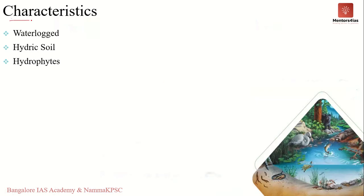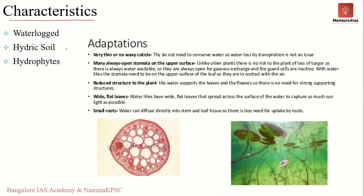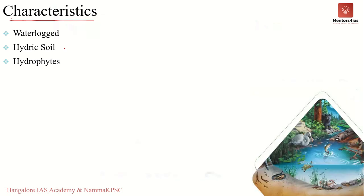Next, the characteristics of wetlands. It does not matter which type of wetland it is — any wetland you take will have three common characteristic features. The first feature is that it is waterlogged — any wetland will be waterlogged, temporarily or permanently, whether by fresh water or saline water.